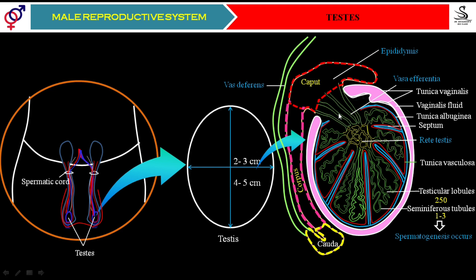Now we understand how the testis is internally made up. In every compartment there are seminiferous tubules, but the space between those seminiferous tubules is filled by a specialized tissue. This specialized tissue is called interstitial tissue. It is a type of connective tissue — specifically loose connective tissue, also known as areolar tissue. We will understand this in more detail in the next slide.